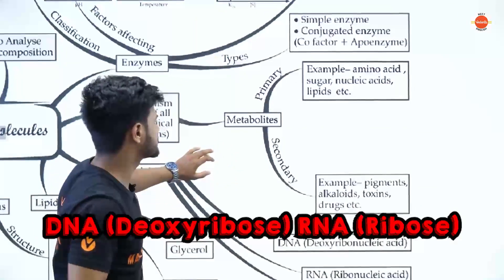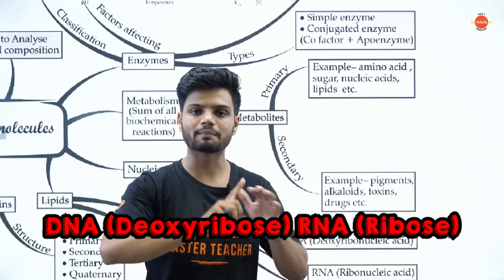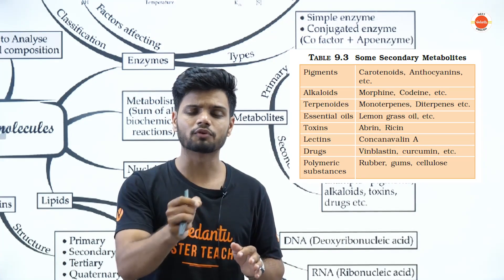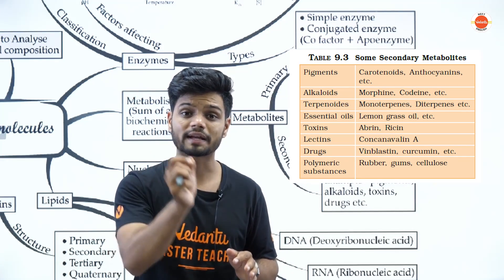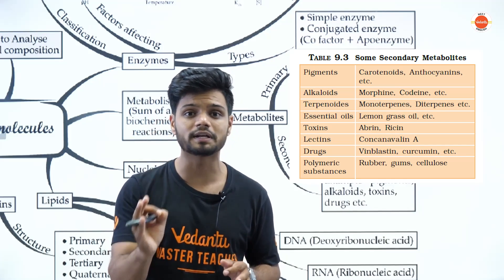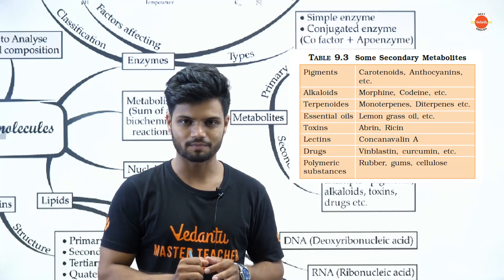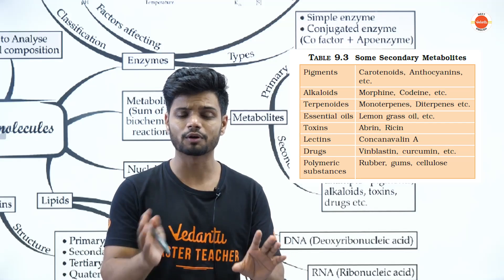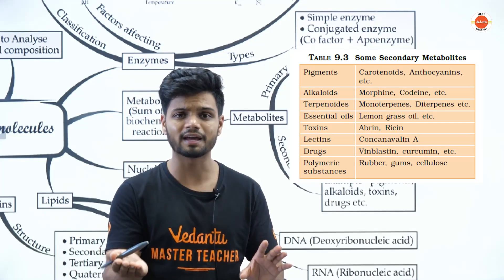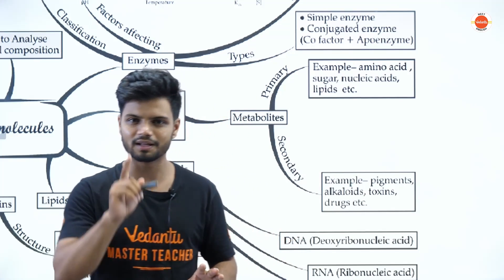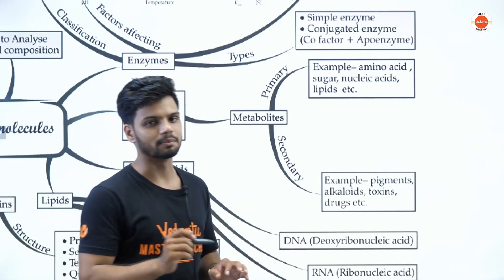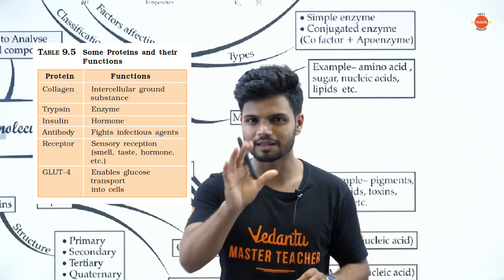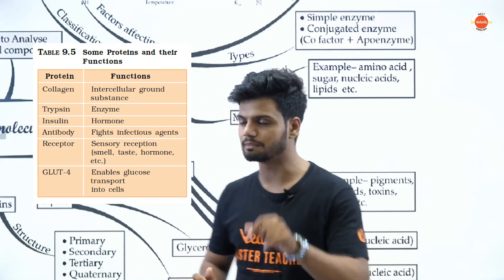Then we have metabolites — mainly two types: primary metabolites and secondary metabolites. The table from your NCERT for secondary metabolites is the most important for examinations — questions come from that table. Examples include concanavalin and various drugs. Also remember the protein function table from NCERT.